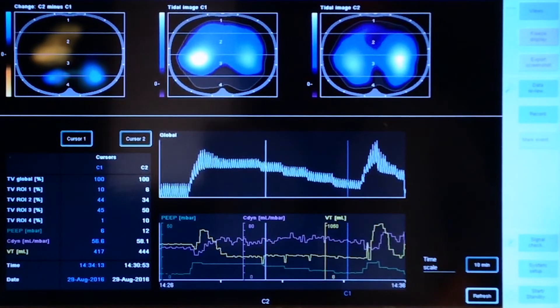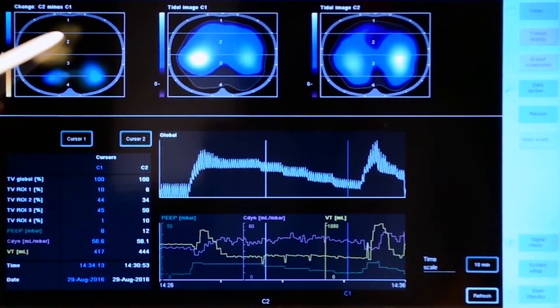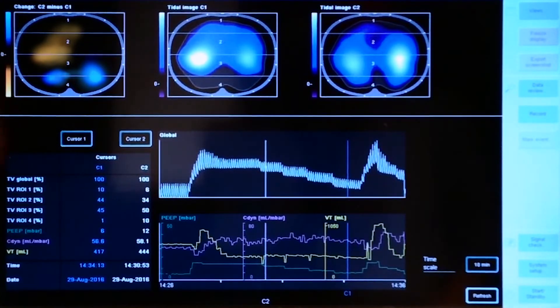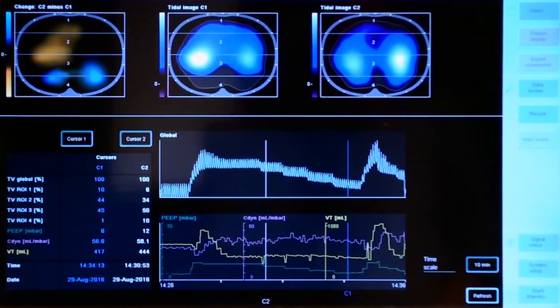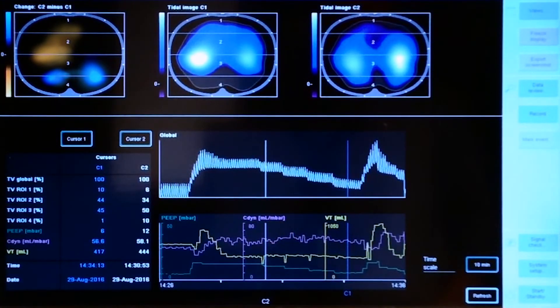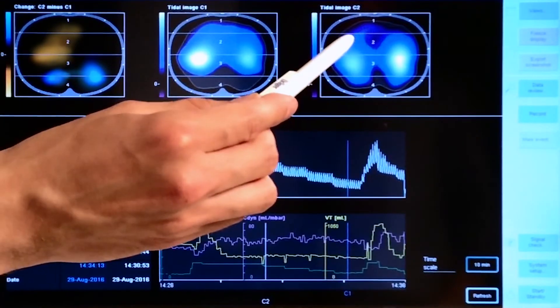Another interesting fact is that we can see this decrease of ventilation in the orange part. But when we take a look at tidal image number 2, we can see that these regions are still being ventilated. So there is a certain drop of ventilation, but these regions are still being properly ventilated.